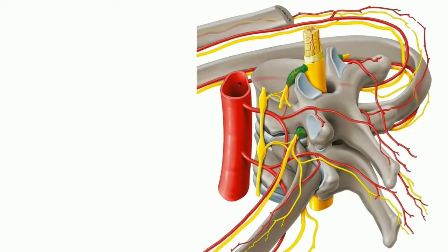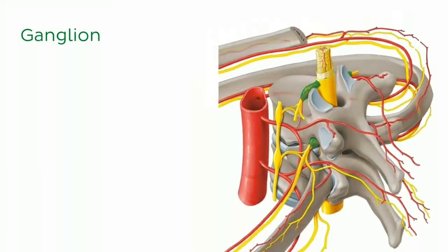So what exactly is a ganglion, I hear you ask? Well, highlighted in this image here are some examples known as the spinal sensory ganglia.